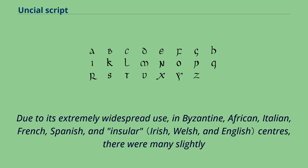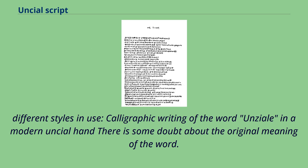Due to its extremely widespread use in Byzantine, African, Italian, French, Spanish, and insular centers, there were many slightly different styles in use. Calligraphic writing of the word Uncial in a modern Uncial hand — there is some doubt about the original meaning of the word. Uncial itself probably comes from St. Jerome's preface to the Book of Job, where it is found in the form uncialibus.